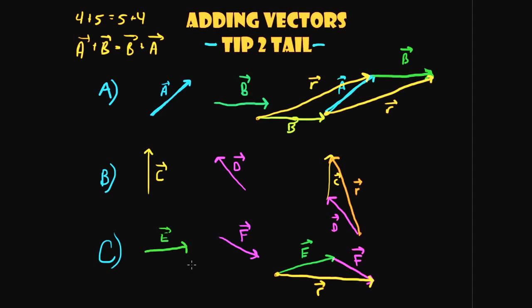A quick recap of the tip-to-tail method: when adding two vectors, you take one tail and add it to the other vector's tip, then draw a line between them — and you're done. It's basic arithmetic: 4 plus 5 equals 5 plus 4, and the same applies to vectors.